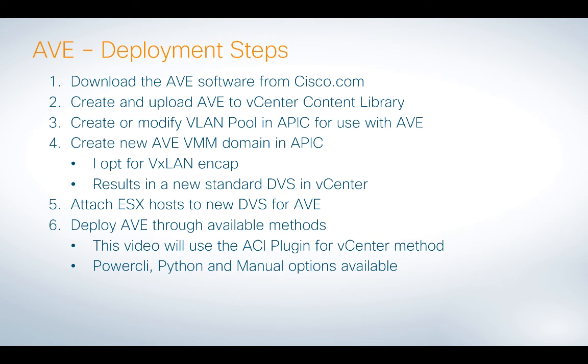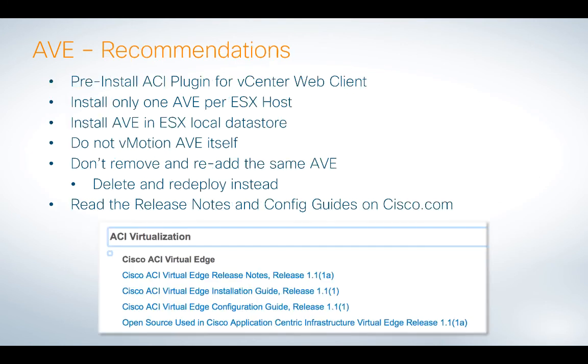Once the ESX host is attached to that DVS, we actually deploy the AVE entity. There are a couple of ways to do this: you can use the ACI plugin for vCenter, PowerCLI, Python, or manually. I'm going to use the ACI plugin. It's a free plugin for vCenter that allows you to configure thousands of things in ACI — not just AVE — but AVE is one of those features that makes it really easy to deploy.